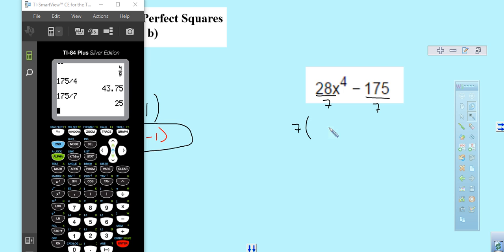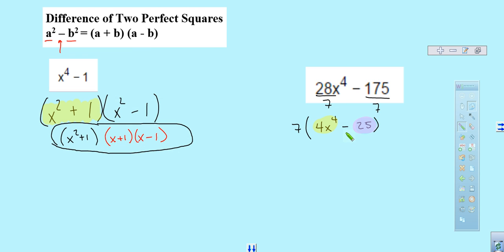So, that would give me 7, 4x to the 4th minus 25. Now, the beautiful part about that now is that now I have a perfect square there. And I have a perfect square there. Separated by a subtraction sign. Which means that I have a difference of two perfect squares.